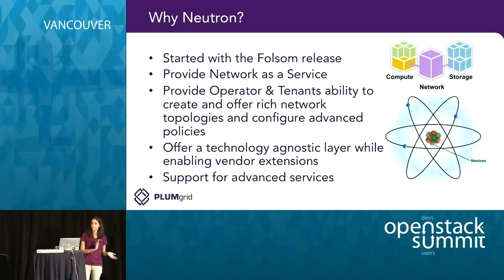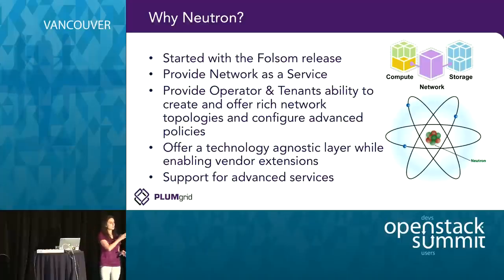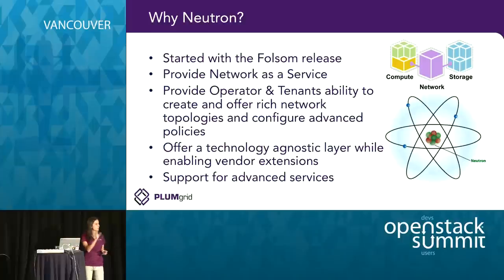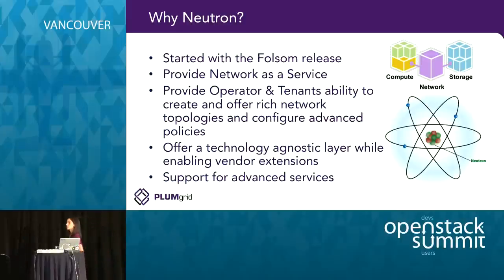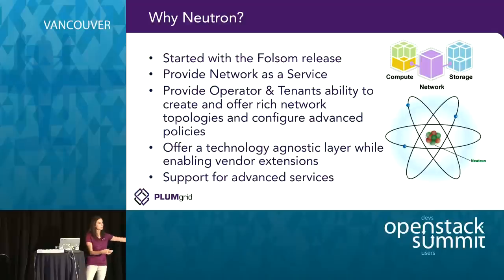From the beginning, Neutron was designed not just to provide basic network functionalities of layer 2 and layer 3, but to allow users to define very rich and complex network topologies — because we want to enable each user to bring every kind of application into the cloud. A simple Amazon model doesn't fit enterprise applications or best practices for deploying applications on top of layer 2, layer 3, NAT, and security. So Neutron, from the beginning, promises to deliver not just basic network functionalities but advanced services. There have been a lot of changes around advanced services with Kilo, and I'll post slides pointing to all the new features.